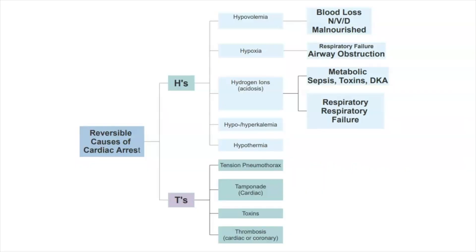Let's start with the H's. The first one is hypovolemia or volume depletion. Listen for any clinical clues that would indicate massive bleeding — maybe they're post-op, trauma, or loss of fluids through nausea, vomiting, or diarrhea. For this patient, we're going to want to establish IV access and give fluids or blood products.